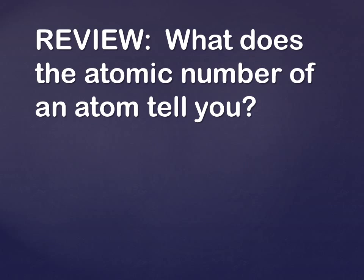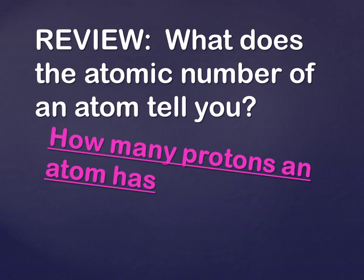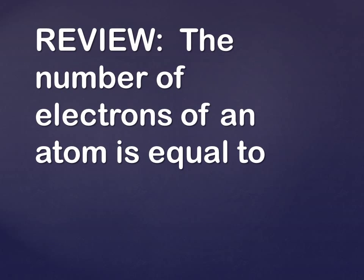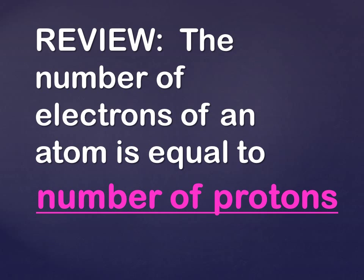Next, we need to figure out what does the atomic number of an atom tell you. And remember, it tells you the number of protons an atom has. We also want to review the number of electrons an atom has. For a neutral atom, the number of electrons is equal to the number of protons. So the atomic number equals the number of protons, and for a neutral atom, that's also equal to the number of electrons.